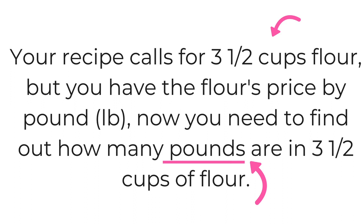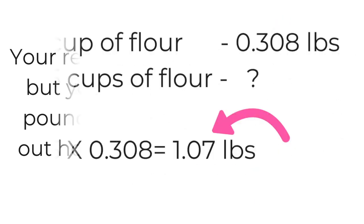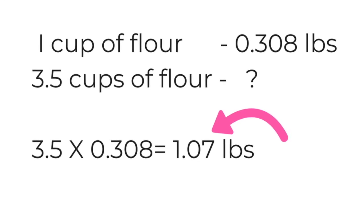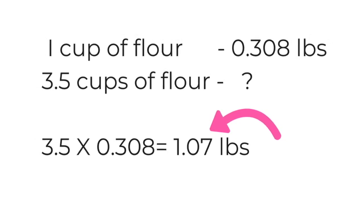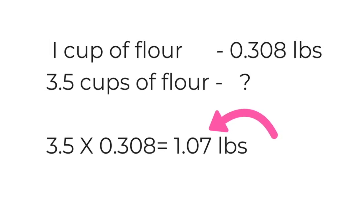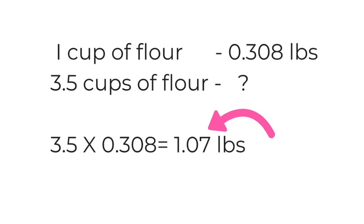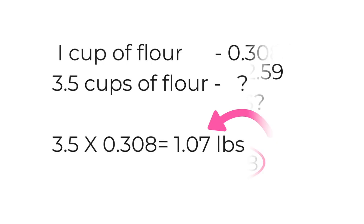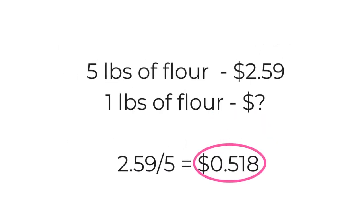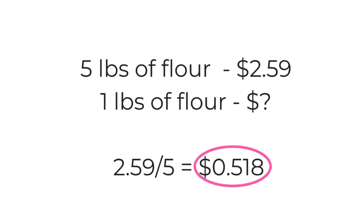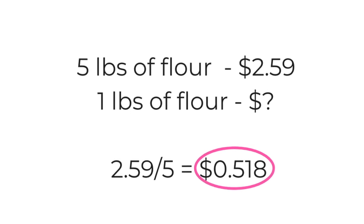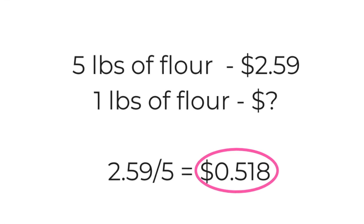Your recipe calls for three and a half cups of flour, but you have the flour's price by pound. Now you need to find out how many pounds are in three and a half cups of flour. One cup of flour equals 0.308 pounds. So by multiplying 3.5 times 0.308, it equals 1.07 pounds. Now that you know that three and a half cups of flour equals about one pound, you need to find out how much one pound of flour costs. You paid $2.59 for a package of five pounds of flour — so $2.59 divided by five equals 51 cents per pound.